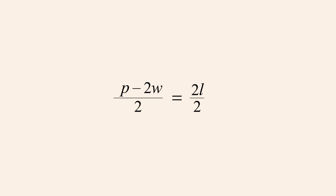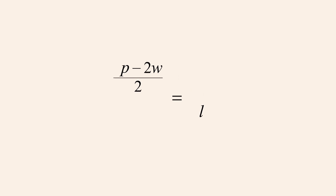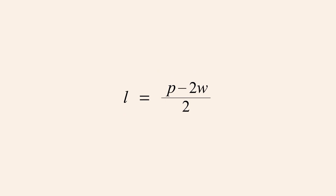This allows us to cancel the 2W term on the right, leaving only the term 2L. Since we want L alone on one side, we must eliminate the multiplier 2. This can be accomplished by dividing both sides of the equation by 2. Since identical factors in the numerator and denominator of a fraction can be cancelled, we can cancel the 2's, leaving only L. Swapping the two sides of the equation, we have a formula which calculates the rectangle's length L given known values for its perimeter and width.